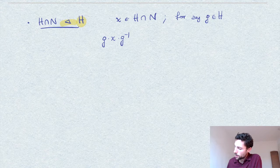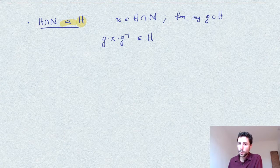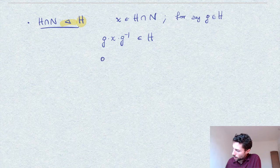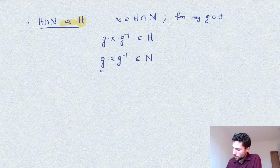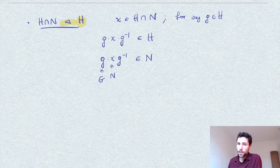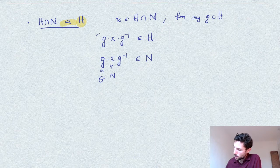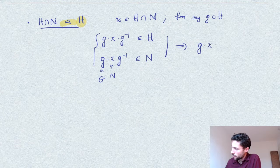For any g in H, we have g·x·g⁻¹: since both g and x are in H, this element is in H because H is a subgroup. At the same time, g·x·g⁻¹ is in N as well, since g is an element of the big group G and x is in N, and since N is normal by assumption, this product is in N. So this element is in H∩N.